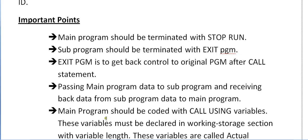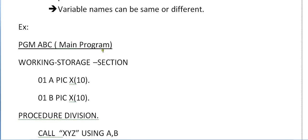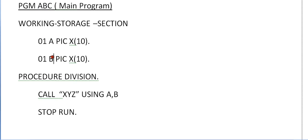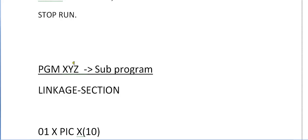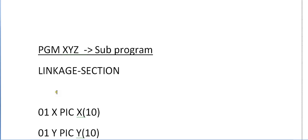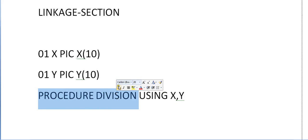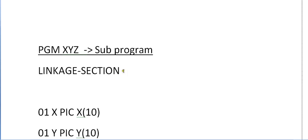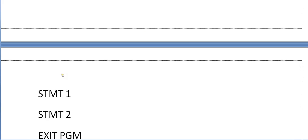These are the important points to ensure whenever you use a CALL statement. In the example program: the main program is named ABC, in Working Storage I'm declaring variables A and B, then in Procedure Division I'm calling XYZ USING A B. The control goes to the sub program and it looks for the Linkage Section where the two variables are declared. In the sub program, the PROCEDURE DIVISION USING X Y receives the values passed from A and B, and the various statements are executed based on the logic.